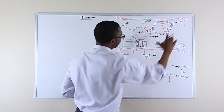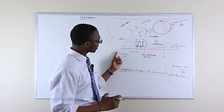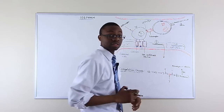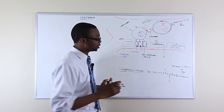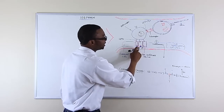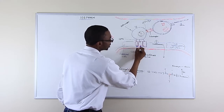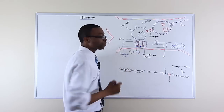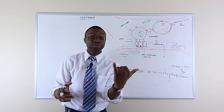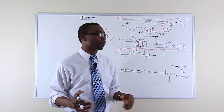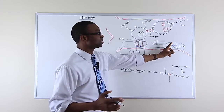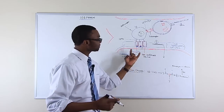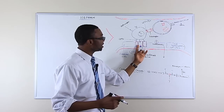This is a blood vessel, and inside are endothelial cells. Endothelial cells have a lot of things they can do. When there's damage to an endothelial cell, you expose the basement membrane, and in the basement membrane there is collagen. As soon as that collagen is exposed, von Willebrand factor is secreted by the endothelial cell.